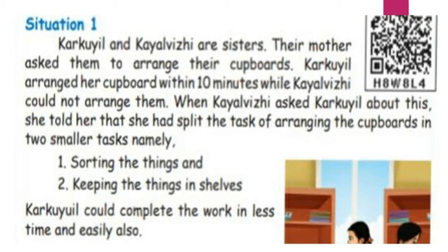Let us see the situation about Information Processing. Situation 1: Karkuil and Kailburi are sisters. Their mother asked them to arrange their cupboards. Karkuil arranged the cupboard within 10 minutes, while Kailburi could not. Karkuil said only two simple things we have to follow: first, sorting the things, and second, keeping the things in the shelf. So Karkuil could complete the work in less time and easily. This is a simple method to solve information processing in our life as well as in Maths.